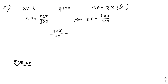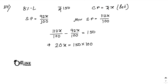According to the problem, 112x by 100 minus 92x by 100 equals 150. So 20x equals 15,000, therefore x equals 750. So 750 is the cost price.